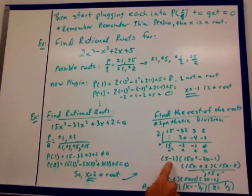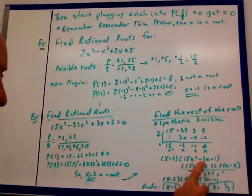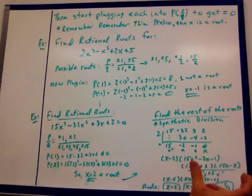So x - 2 is a factor. And then, remember, constant x, x squared, so 15x² - 2x - 1 is the other factor.